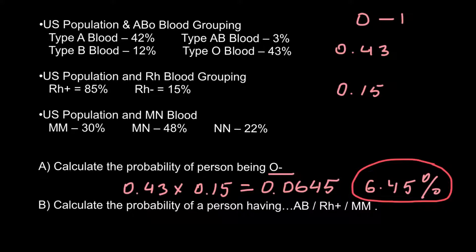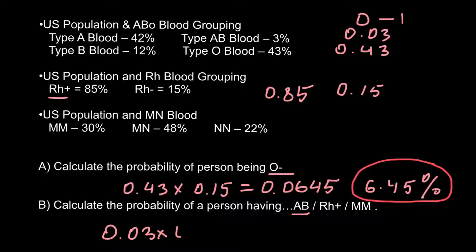The probability of being blood group AB is 3%, or 0.03. The probability of being RH positive is 0.85. The probability of belonging to genotype MM is 0.30. We multiply all three: 0.03 × 0.85 × 0.30, and the answer is 0.00765.